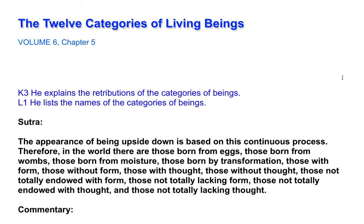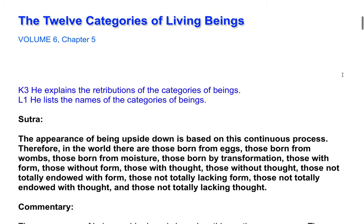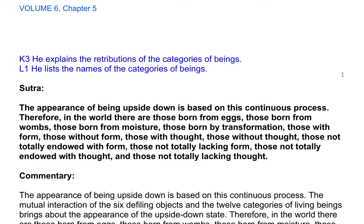The 12 categories of living beings, Volume 6, Chapter 5. Sutra: The appearance of being upside down is based on this continuous process. Therefore in the world there are those born from eggs, those born from wombs, those born from moisture, those born by transformation, those with form, those without form, those with thought, those without thought, those not totally endowed with form, those not totally lacking form, those not totally endowed with thought, and those not totally lacking thought.